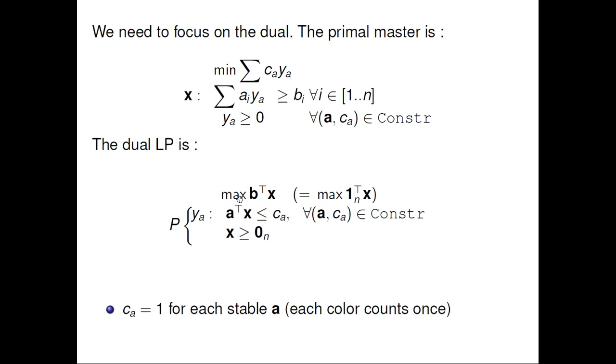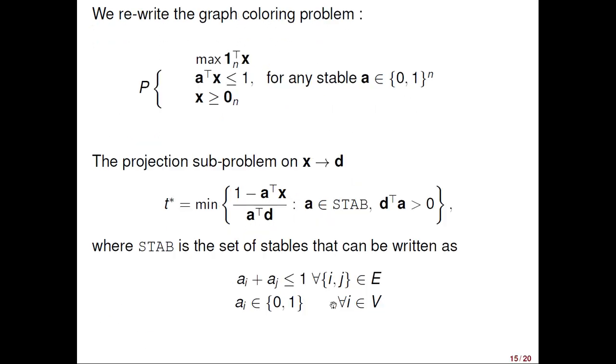b_i is usually 1. So, the dual LP linear program will be written this way. We maximize, we actually maximize the dot product between the vector of all 1s and x. Under this constraint, which basically says that dot product a·x less than or equal to 1, because c_a is 1, because each color counts once.